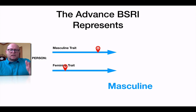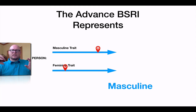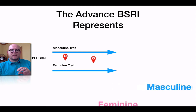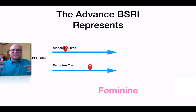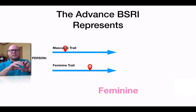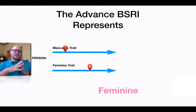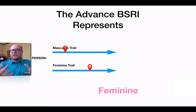When you take the Bem Sex Role Inventory, each person gets rated on both sets of traits. If you score high on the masculine traits and low on the feminine traits, you're considered masculine. If you have a low score on masculine traits — and a low score just means you score below the median on that particular set, not that you're doing it wrong — it means you tend to use fewer masculine behaviors and traits. So if you score low on masculine and higher on feminine, the test shows a more feminine approach to sex roles.